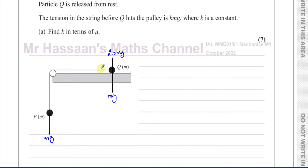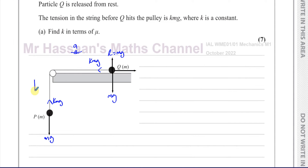We have the tension in the string pulling Q horizontally towards the pulley and pulling P upwards. The tension is KMG throughout, since it's a light inextensible string. Because this is a rough surface and the system is released, there's friction opposing the motion of Q. The system will accelerate in the direction Q moves, so friction has reached its maximum value: F_max equals mu times R.